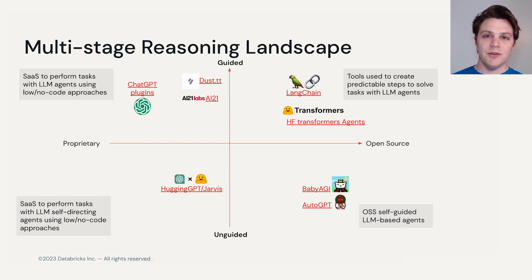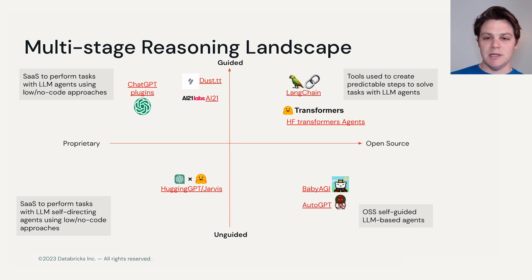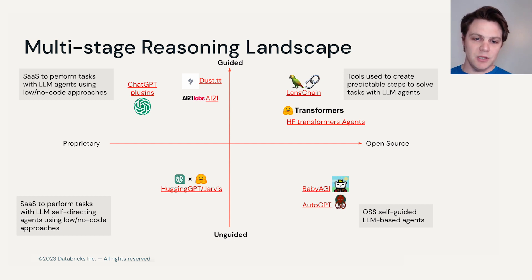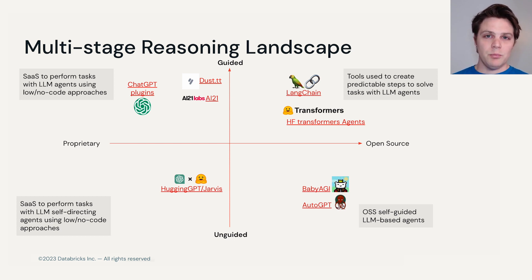These multi-stage reasoning tools are starting to form a bit of a landscape. We have differences in products based on whether they're proprietary or open source, and whether or not they're guided — like the structured building blocks we have for LangChain or HuggingFace Transformers — or unguided, like HuggingGPT, BabyAGI, and AutoGPT. I highly recommend checking out all of these as they're very fascinating and continuously being updated. We'll look at how we can build some of these in the notebook to follow, and hopefully you're as excited as I am about the future of this LLM agent landscape.